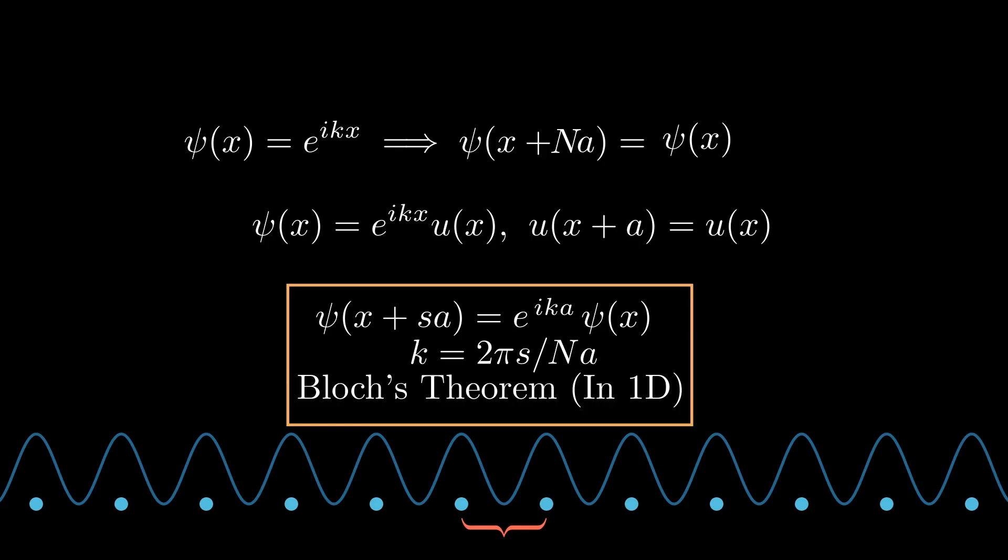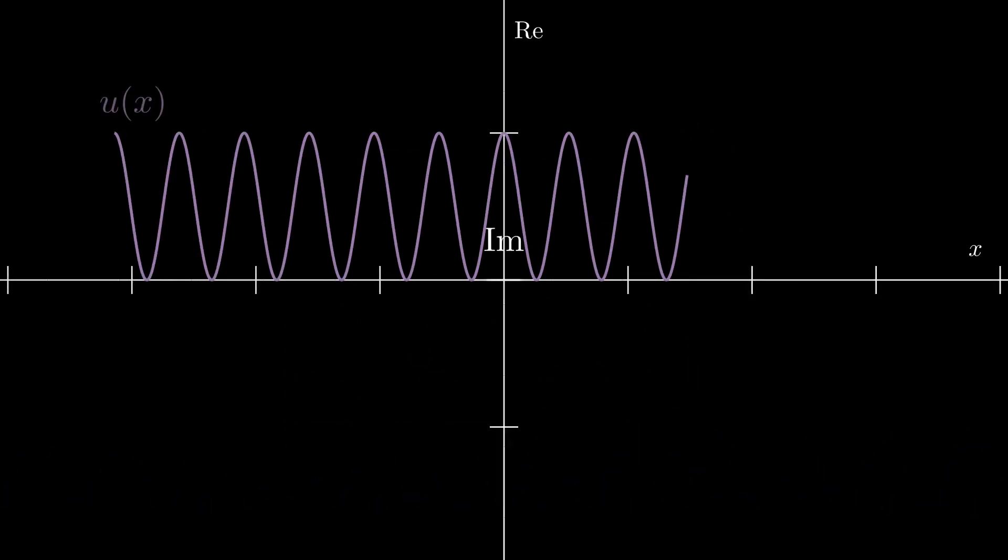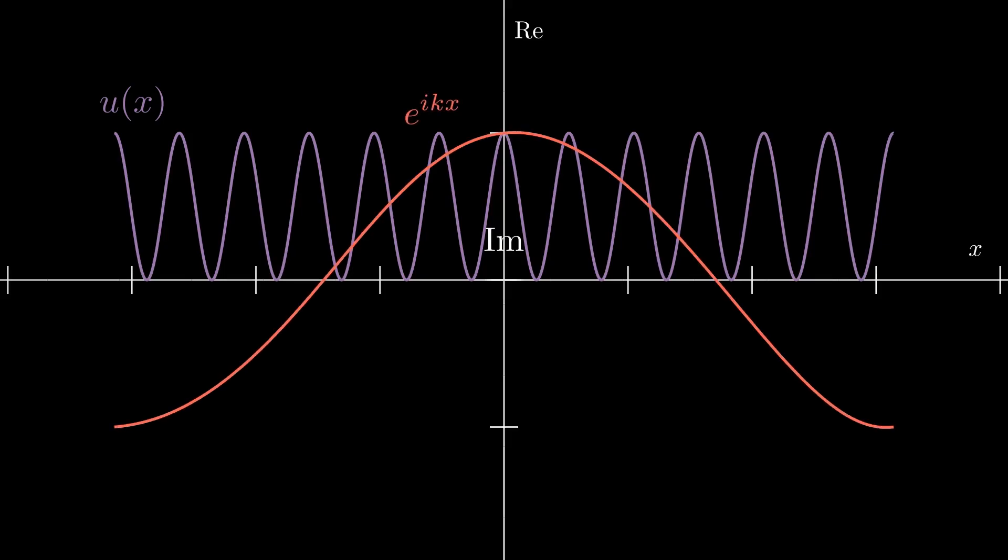I know I just went through a lot of algebra, so here's an example with some visualization. I've drawn out three axes here, Re, Im, and x. Re and Im are the real and imaginary number lines which form the complex plane, and x is the line along which our crystal lattice lies.